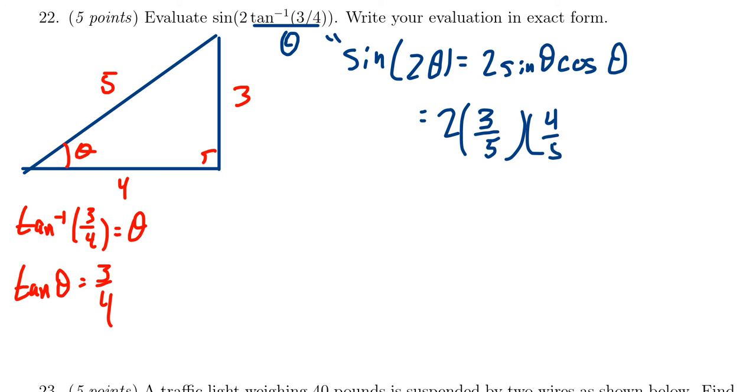And so multiplying that together, two times three is six, times four is 24, five times five is 25. And so we see that sine of two arc tangent of three-fourths would equal twenty-four over twenty-five.